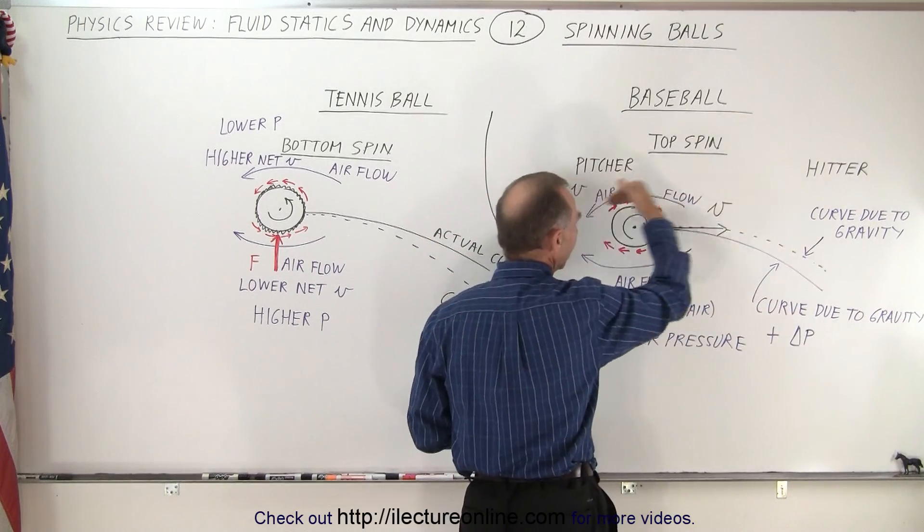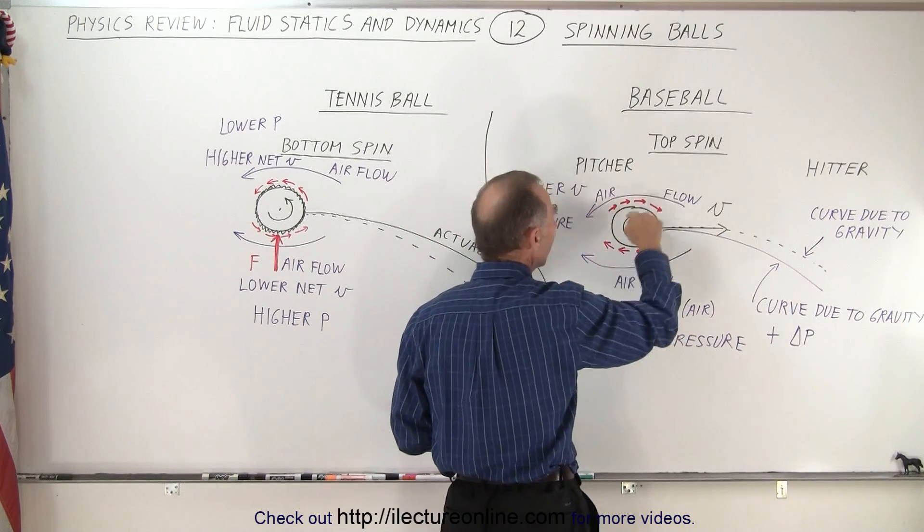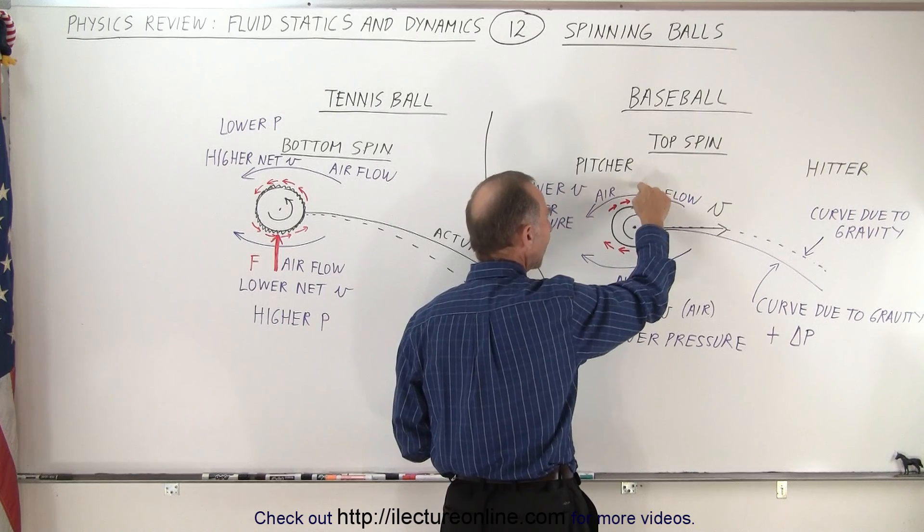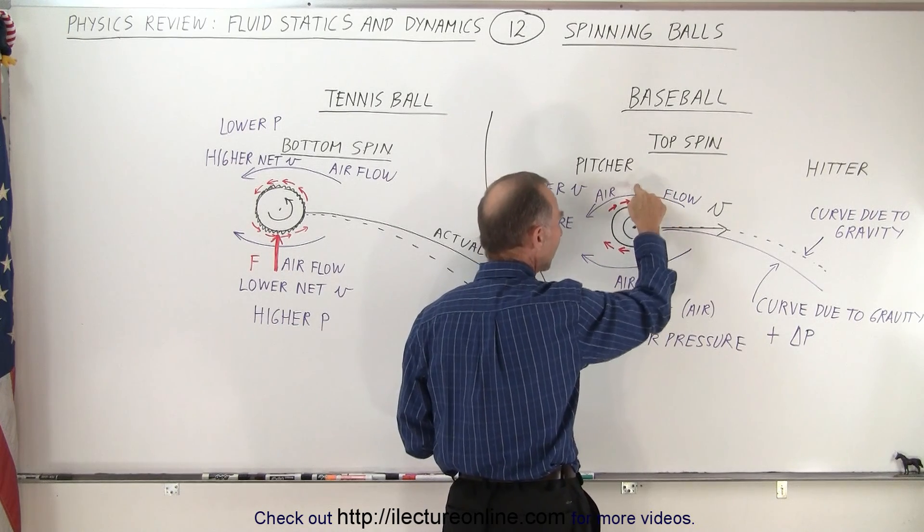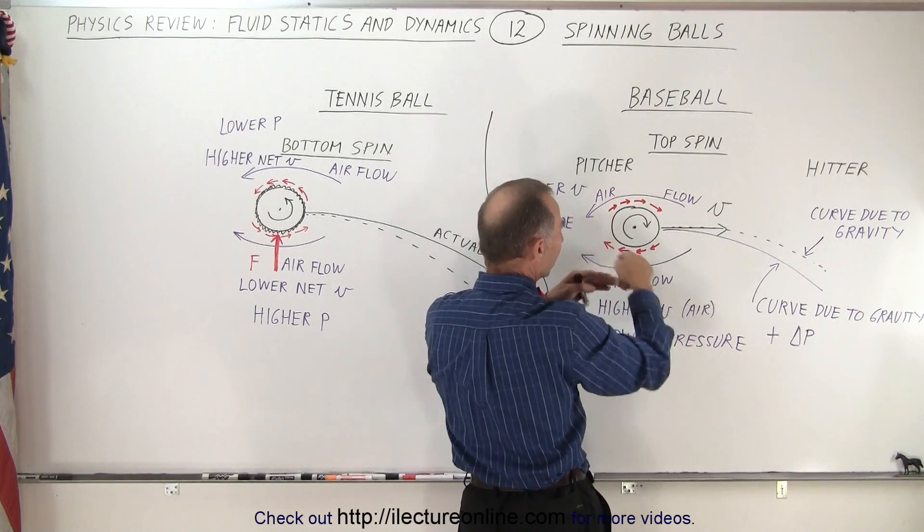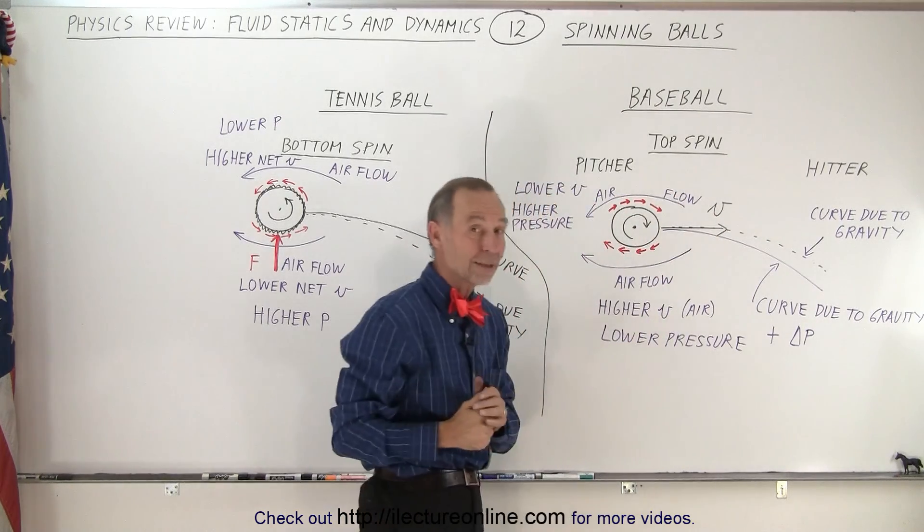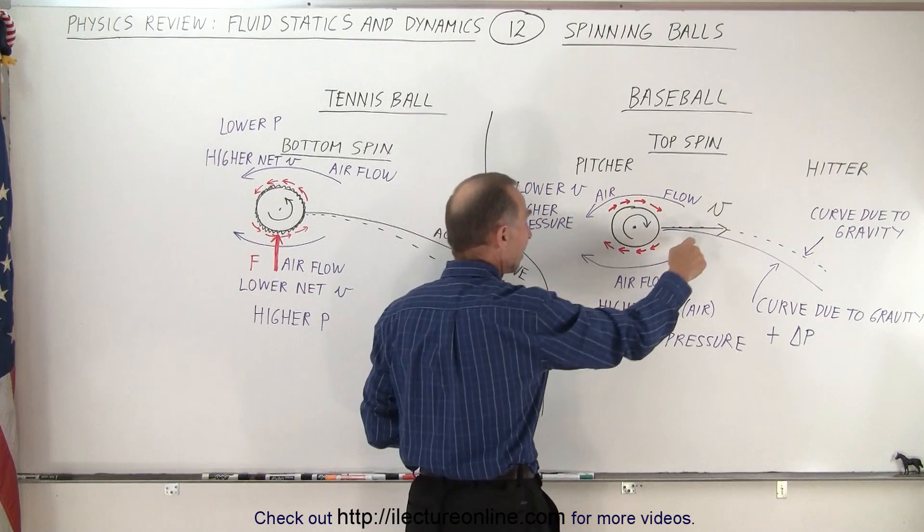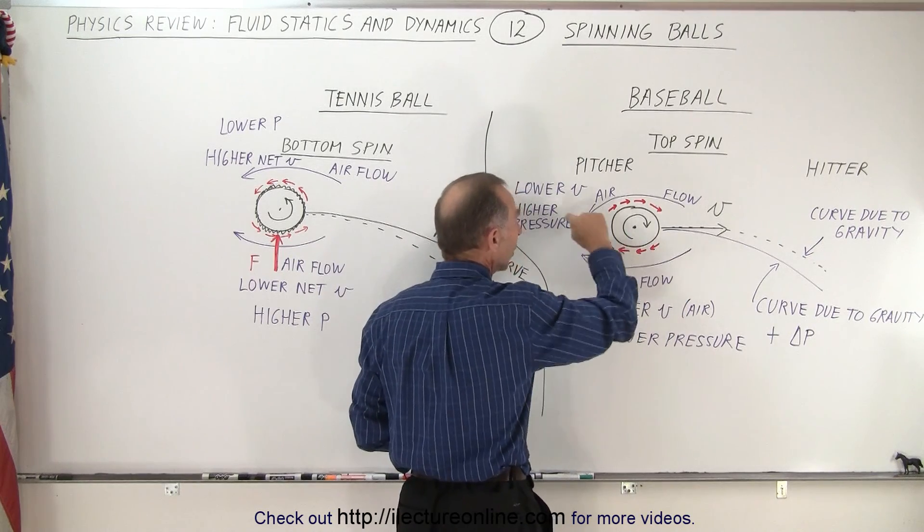Of course airflow goes on both sides of the ball, but the net velocity at the top part will be less at the top and greater at the bottom, because here the velocity directions are opposite and here the velocity directions are in the same direction. You'll have a faster velocity at the bottom, a slower velocity at the top.